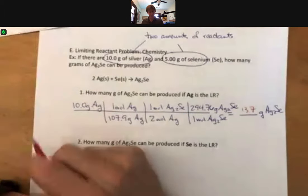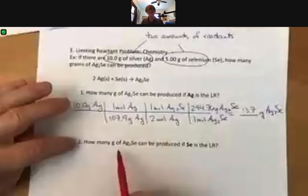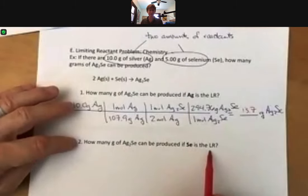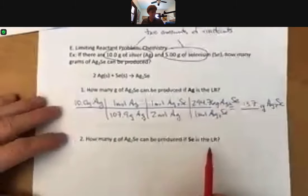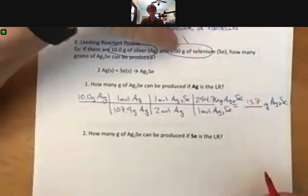We're not done. That was one of them. We still have to ask the question, how many grams of silver selenide can be produced if selenium is the limiting reactant? Same type of setup. We have five grams of selenium, 5.00 grams.